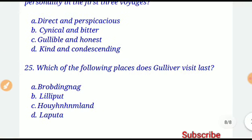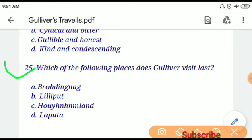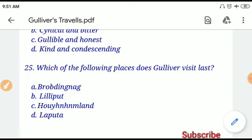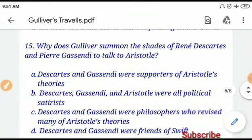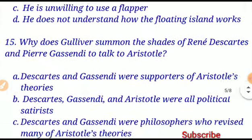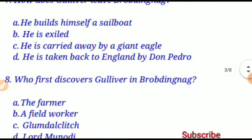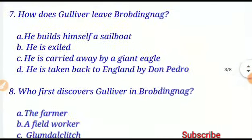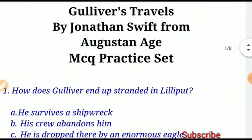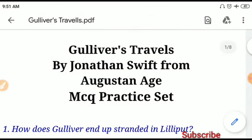Question number twenty-five, the last question of this video: Which of the following places did Gulliver visit last — Brobdingnag, Lilliput, Houyhnhnmland, or Laputa? If you choose option B, that will be the correct answer. So friends, if you liked this video, please don't forget to hit the like button and press the subscribe button to subscribe to my channel, as well as press the bell icon so you get my latest video notifications. Goodbye. Namaskar. Bye bye.